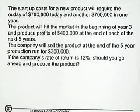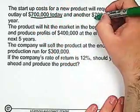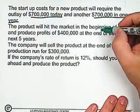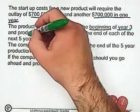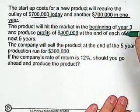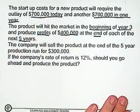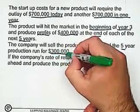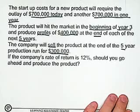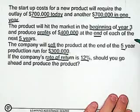Going back to the top: the startup costs require us to pay $700,000 today and another $700,000 in one year. The product will not hit the market until the beginning of year three, producing profits of $400,000 at the end of each of the next five years. The company will sell the product at the end of the five-year production run for $300,000. The company's rate of return is 12%.